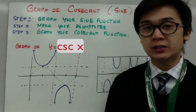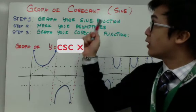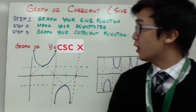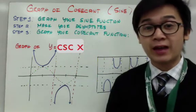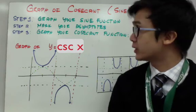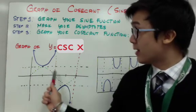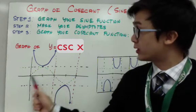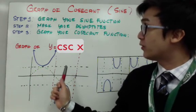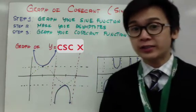There are some series of steps you need to follow in graphing the cosecant function. The first step is to graph the sine function, because the graph of cosecant is dependent on the graph of the sine function. Then you need to find your asymptotes by finding the x-intercepts of your sine function, and then you graph your cosecant function based on its behavior.